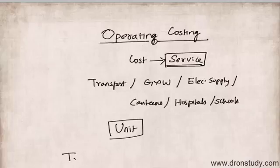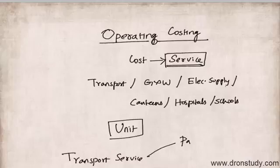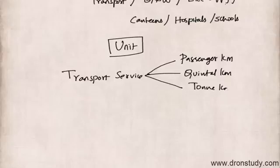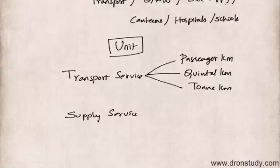The cost units used in various service undertakings are as follows. In the case of transport service, the cost unit can be passenger kilometer, quintal kilometer, or per ton kilometer. For supply services, the unit factor may be kilowatts per hour, cubic meter, per kg, or per liter.